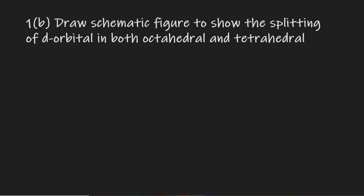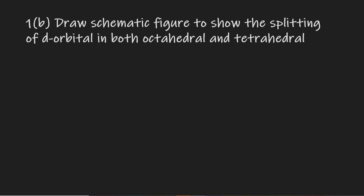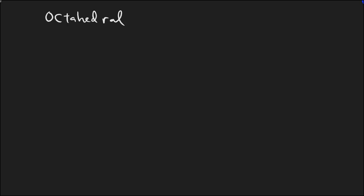Question 1b says: draw the schematic figure to show the splitting of the orbitals in both octahedral and tetrahedral. This is simple because we've already seen it in the Jahn-Teller theory, but since it's a question we'll answer it for more understanding. Let's start with the octahedral. For octahedral, the free metal ion has all five d orbitals degenerate — same energy level — and we have them all at the same level.